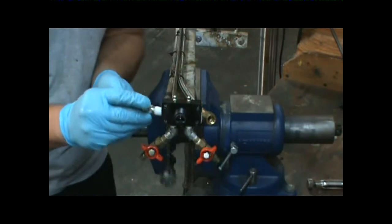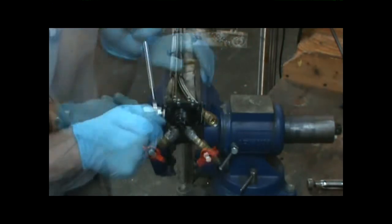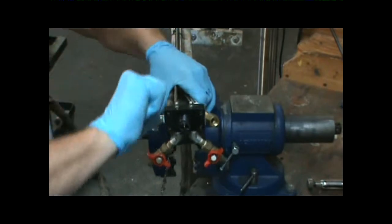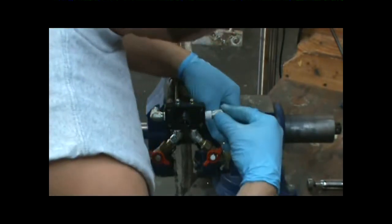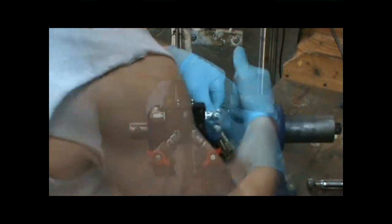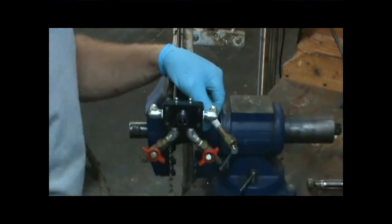As you can see I have Teflon tape on that side which is the pipe thread and the other side where the hose goes onto there is no Teflon at all. Very important not to put any Teflon tape on that hose fitting because the compression fitting does not need the Teflon to make the seal.